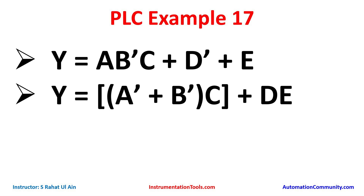We will start with the first expression. For inputs A, B, C, D, and E, we'll use normally open and normally closed contacts. B and D will use normally closed contacts, and A, C, and E will use normally open contacts. A, B, C will be connected in series, then D in parallel, and A in parallel — giving us AND logic followed by two OR logic gates.